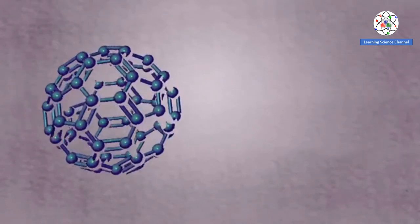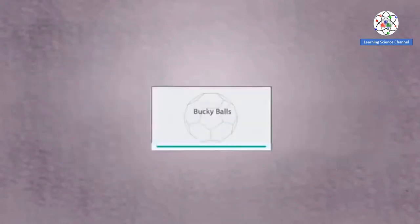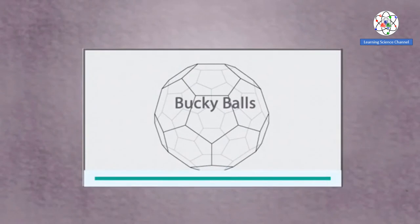Some other allotropes of carbon include the Buckminster fullerene molecule and graphene. You can learn more about these structures right here.